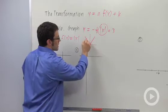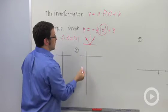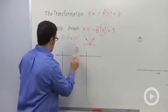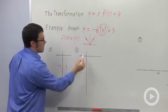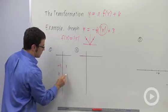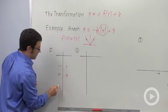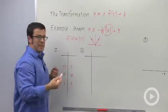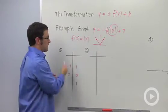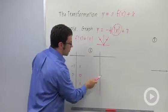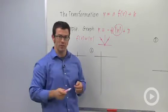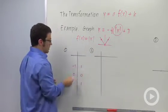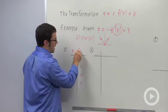And there are three key points I usually like to start with. There's the point negative 1 comma 1, the point 0 comma 0, and the point 1 comma 1. And my technique here is basically to take points of my parent graph and transform those points first and then plot the transformed points. So these are points of absolute value x.